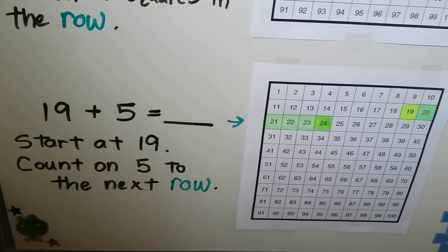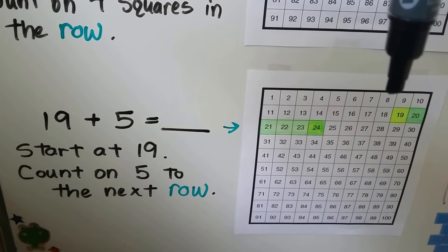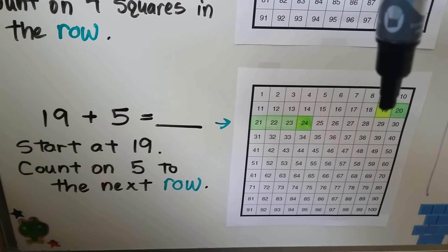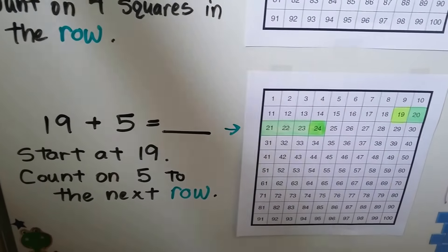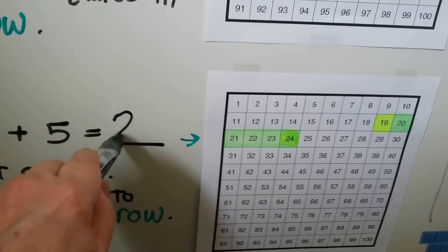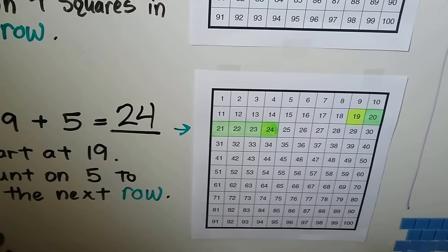19 plus 5. We start at 19. We count on 5 and it'll take us to the next row. 19 and 1, 2, 3, 4, 5. It's equal to 24. We had to go to the next row to move 5 squares.